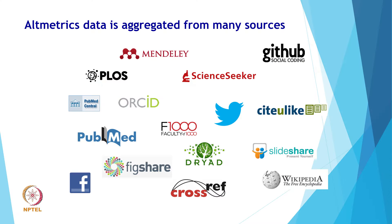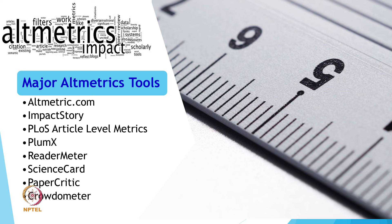Altmetric data is aggregated from many sources such as GitHub, Mendeley, ORCID, Figshare, Slideshare, Wikipedia, and many others. There are a number of altmetric tools, including Altmetric.com, ImpactStory, PLOS Article Level Metrics, Plumex Metrics, ReaderMeter, Science Card, PaperCritic, and Crowdometer.